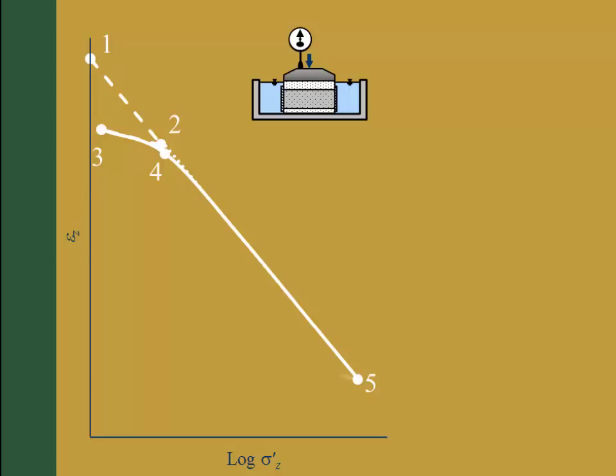The consolidation test continues with unloading, during which the soil travels along the rebound curve from point 5 to 6. However, realize that the only information you will have is the laboratory stress strain curve shown here. Due to the plastic strain during consolidation, it will have a recompression curve, a virgin curve, and a rebound curve. And the point where the recompression and the virgin curves meet is the pre-consolidation stress sigma prime c.